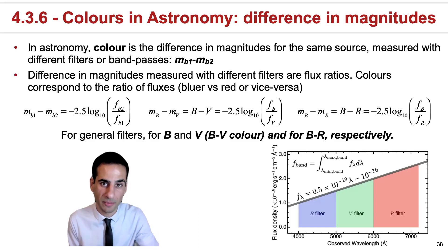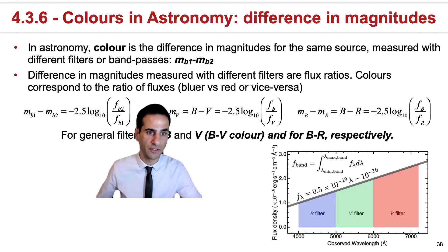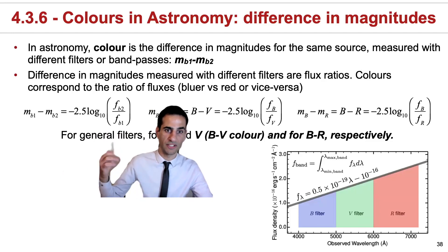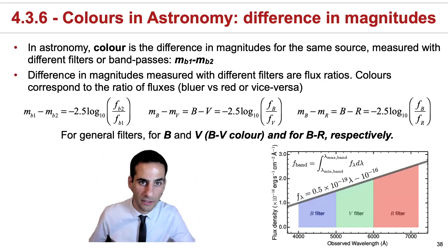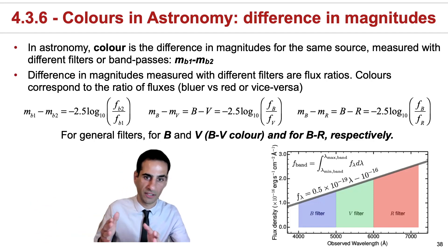A color in astronomy is simply a difference in magnitudes obtained with different bands, say band B1 and B2. Because of this and the way we define magnitudes, the difference in magnitudes is essentially the ratio of fluxes. A color in astronomy is really a proxy for the ratio of fluxes, how bright the same source is at longer versus shorter wavelengths.